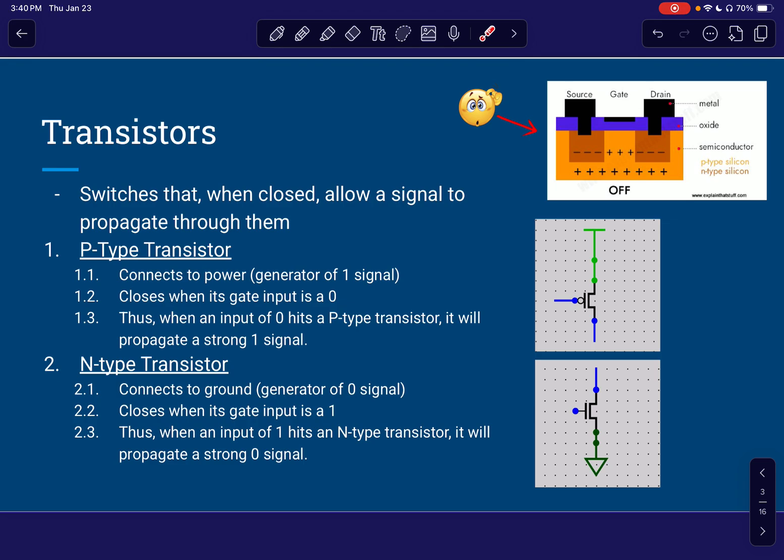And what we know about a P-type transistor is that when its gate input is a zero, so when the line being fed into its gate input right here is a zero, this switch will close. And we know that when closed, the signal can propagate. So we can combine kind of these first two, 1.1 and 1.2, into our 1.3 statement, where we say that when an input of zero hits a P-type transistor, so right here is its gate input, it will propagate this strong one that's being sent from the power. So right now, we know that there's no signal being sent to its gate input. So this one is being sent down. But because this switch is still open, since it didn't have a zero as its gate input, its output, also called the drain, is floating. So no signal is being sent through this transistor right now.